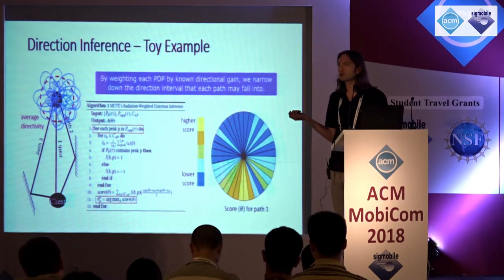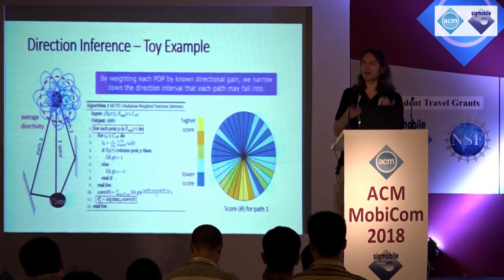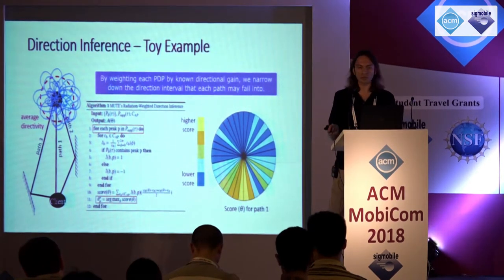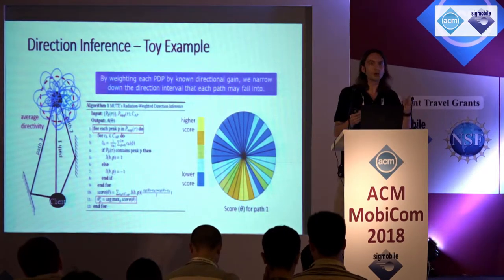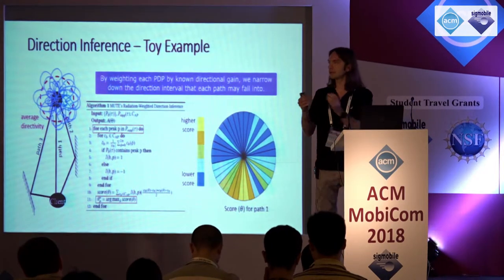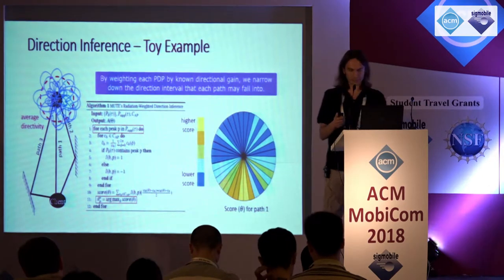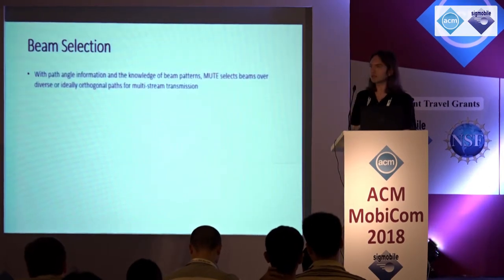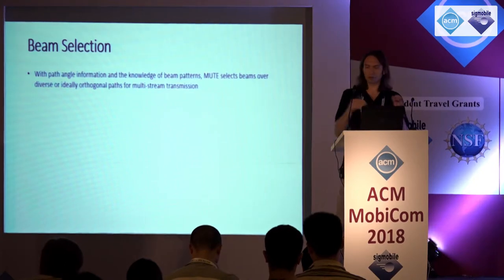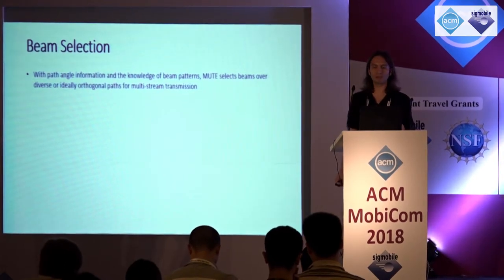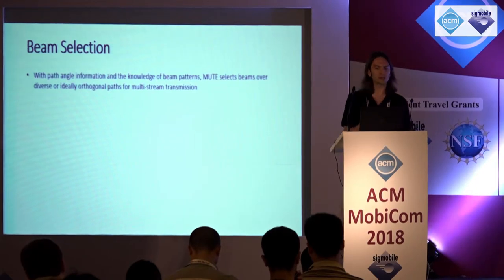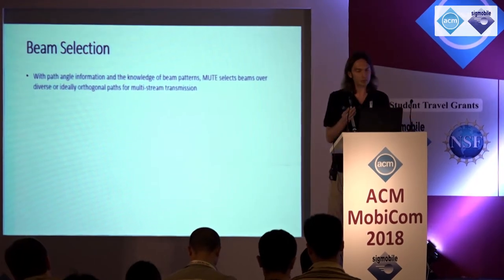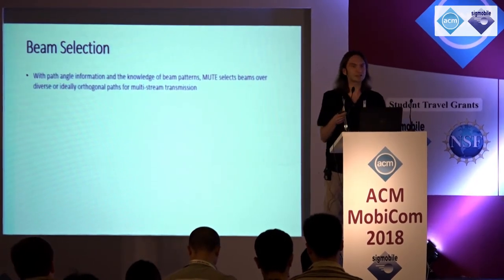How accurately you can do that depends on the beam patterns, the beam width, how overlapping the beams are, and the resolution with which you know the gain for each angle. Once we get the direction for each path, along with the knowledge of the beam patterns, we select beams over a diverse or ideally orthogonal set of paths for multi-stream transmission. For a candidate set of beams for user U in a group of users G, we select a beam that has high directivity gain along the dominant path of that user while minimizing the directivity along all the dominant paths of all other users.